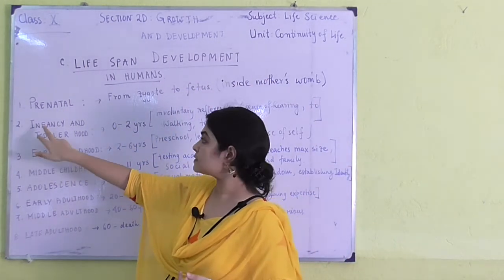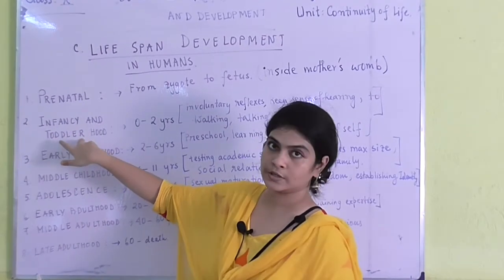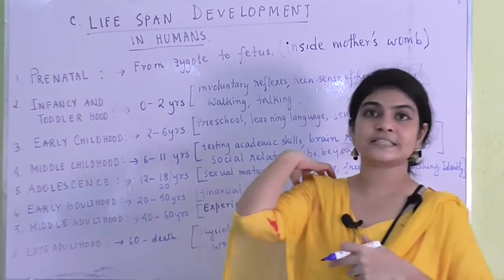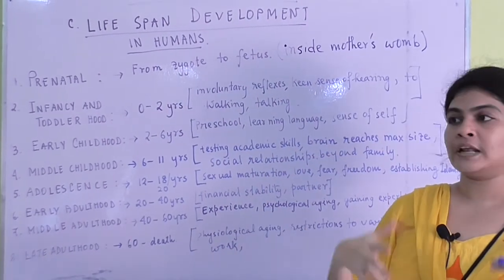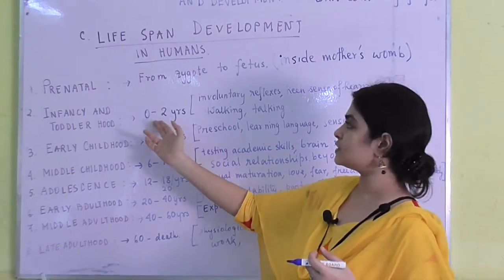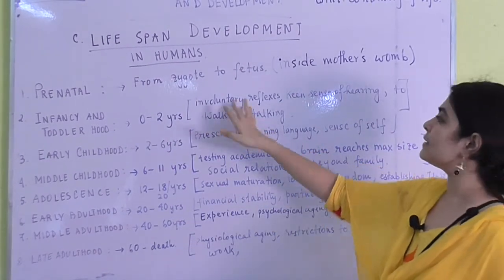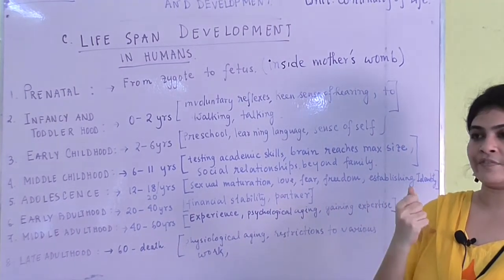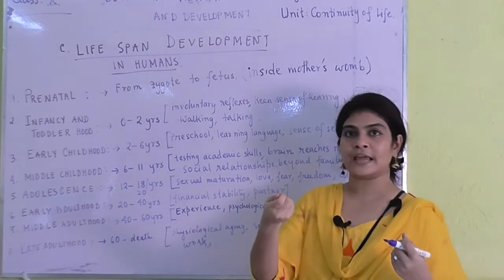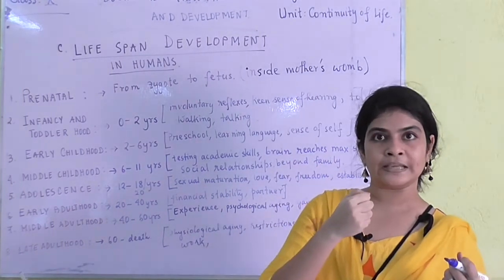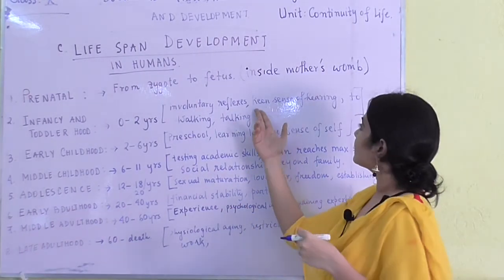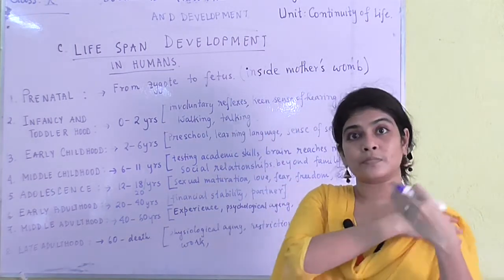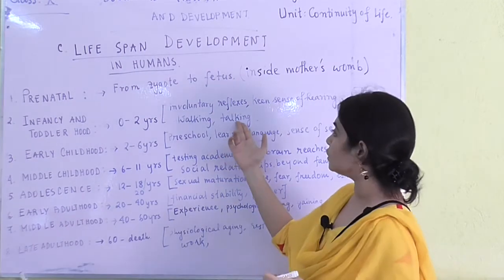The next stage is infancy and toddlerhood, which includes zero to two years. The changes we see include involuntary reflexes — for example, if light is put to their eyes they will blink. They have a keen sense of hearing. They slowly start blabbering, and learn talking and walking.